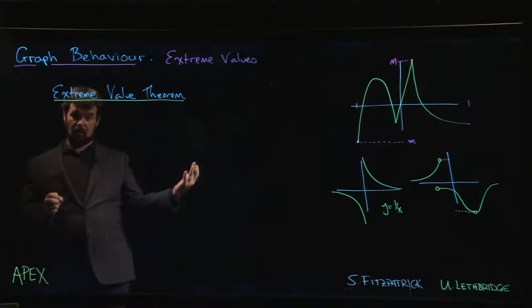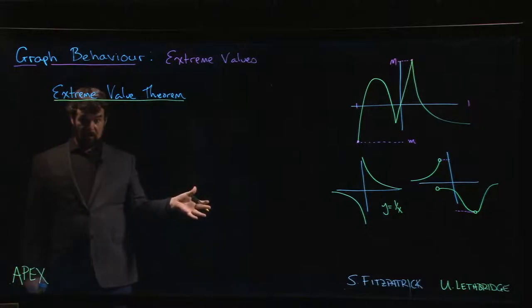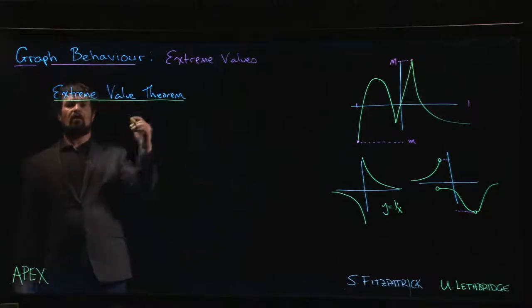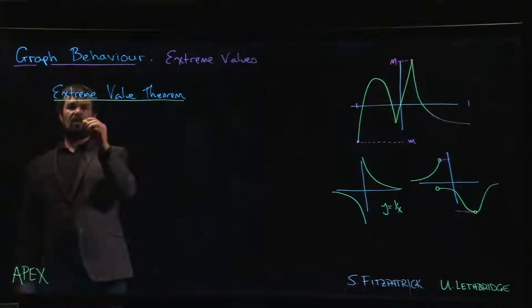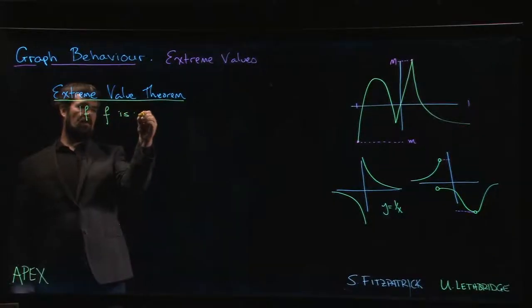Okay, so the extreme value theorem gives us some conditions, fairly reasonable conditions, under which we can guarantee the existence of these values. So the extreme value theorem says that if our function f is